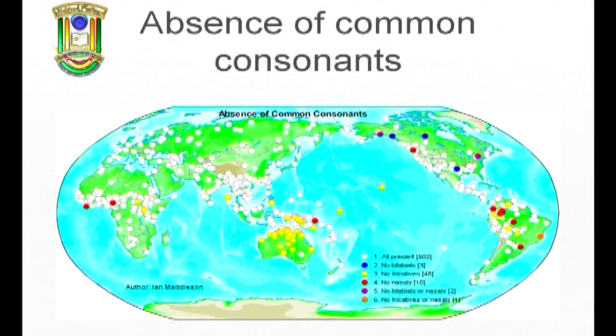In English, Urdu, Telugu, and so on, are common consonants absent? The answer is no — looking at a map of languages around the world where common consonants are absent, you see the white dots representing languages where common consonants are not absent, which is true of both Hindi and Urdu. But looking at the presence of uncommon consonants, you see that in languages spoken in India, there are no languages with uncommon consonants — all the consonants found in Indian languages are common enough around the languages of the world.